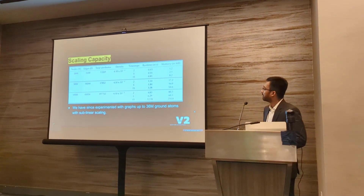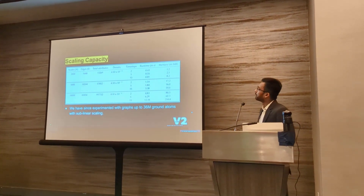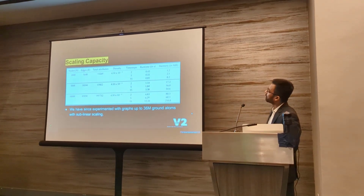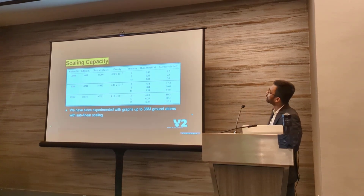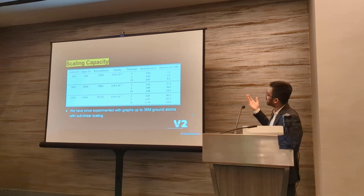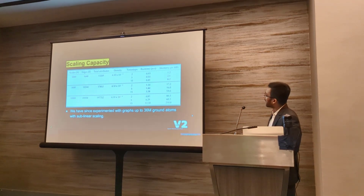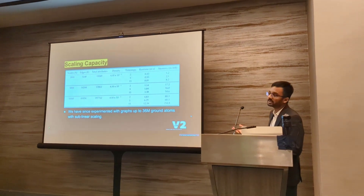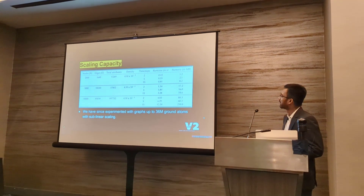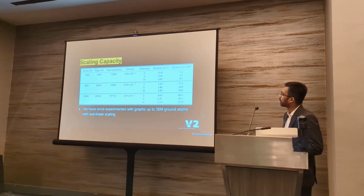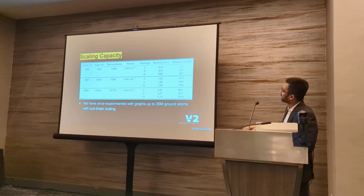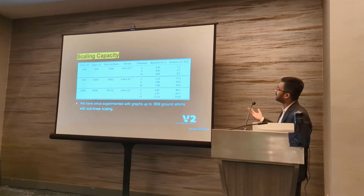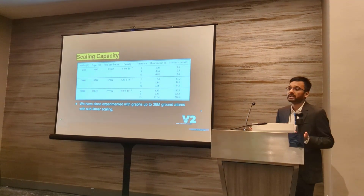For scaling capacity, we ran experiments by fixing the number of nodes and varying the number of time steps, and then also varying the number of nodes. It shows sublinear scaling, and this was on an AWS instance costing about $2 an hour. We have continued experimenting and have gone up to 36 million ground atoms with sublinear scaling — achieved in under 20 minutes — though that occurred after the paper was submitted.